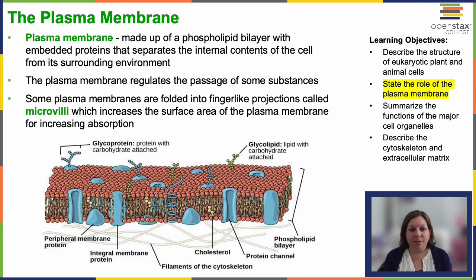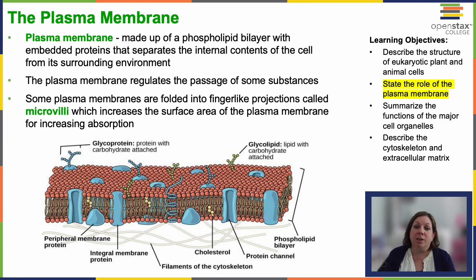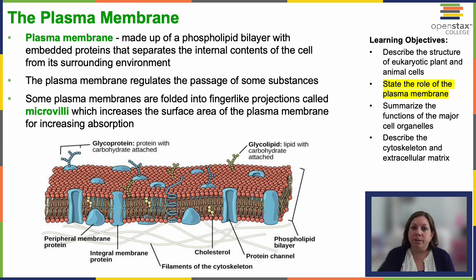Let's start with the surface of the cell. The plasma membrane is this complex lipid bilayer that serves as a dynamic interface between the cell and its surroundings. There's a diverse range of embedded proteins and other molecules that structure the membrane. It not only defines the boundary of the cell, but it orchestrates an array of vital processes, including molecular transport, signal transduction, and cell recognition — like how your immune system recognizes the cells that belong in your body versus foreign invaders.